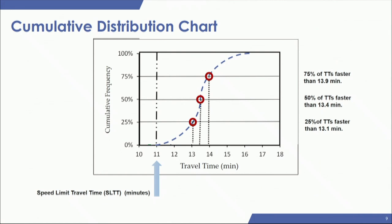The methodology starts with the cumulative distribution chart, used to assess congestion severity and reliability. The y-axis is cumulative frequency and the x-axis is travel time. The speed limit travel time represents how long it takes to traverse the segments at the speed limit — theoretically a vertical line, but in reality you end up with a distribution.